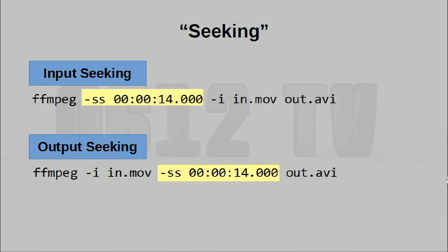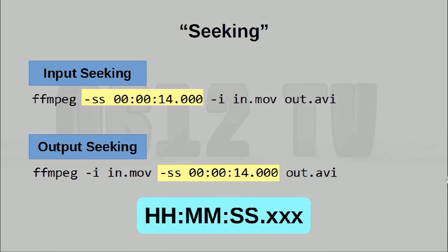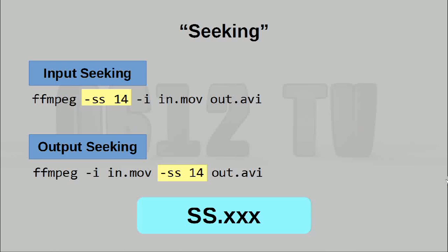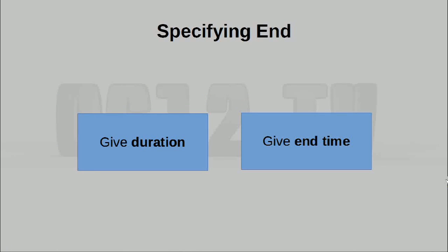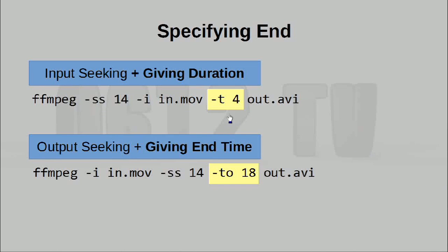As you can see, we've made use of the -ss command switch to specify the start time of the video. The only difference between the two command calls is the order in which we do things. In input seeking, we specify the time first before specifying the input file. In output seeking, we specify the time after the input file. Incidentally, speaking of specifying the time, the format being used here is hours, minutes, and seconds. Since this is a very short video, we can simply specify the number of seconds and FFMPEG understands that as well. Let's now look at how to actually specify the end point. There are two different ways: you can either specify the duration of the final output, or give an ending timestamp for the encoding to stop. To give a duration, you simply say -t followed by how long you want your video to be. To specify an end time, you say -to and give the end time.